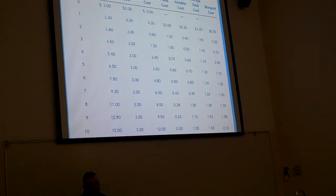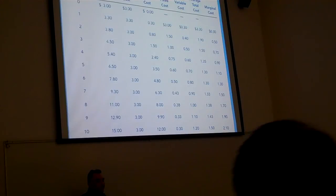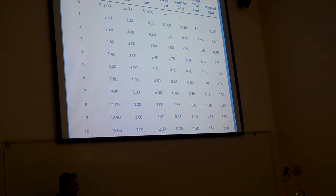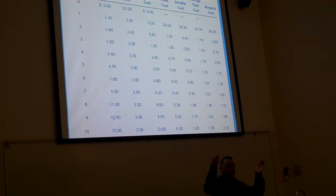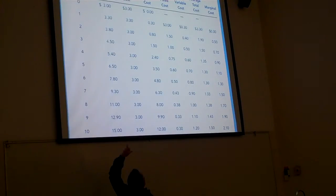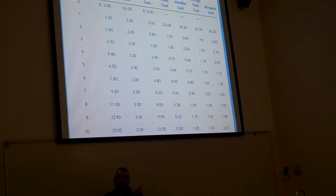Here's the lemonade cost table — it looks complex but it's really simple. With zero output: total cost is $3, all of it fixed cost — that's the cost to rent the lemonade stand. Zero variable cost. With one glass of lemonade: total cost goes to $3.30. Fixed cost is still $3. Variable cost is $0.30 — the cost of cups and ice. With two glasses: variable cost is $0.80. With three glasses: variable cost is $1.50.